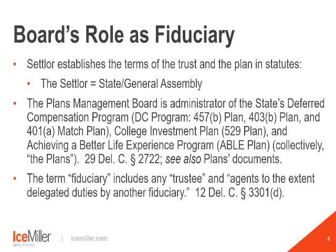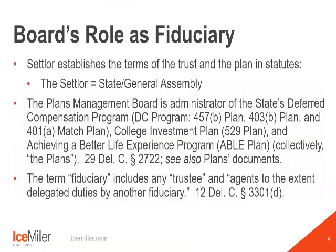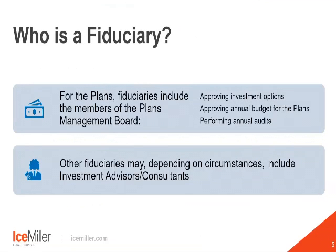Delaware code defines fiduciary pretty broadly. It includes any trustee or agent, to the extent delegated duties by another fiduciary. Who is a fiduciary for the plans? It includes the members of the plan management board. The board is a fiduciary both by designation — meaning the code specifically says they're a fiduciary — but also by function. The board has the authority to approve investment options, approve the annual budget for the plans, and perform annual audits. There can be other fiduciaries depending on the circumstances, such as an investment committee, investment advisors, or consultants.